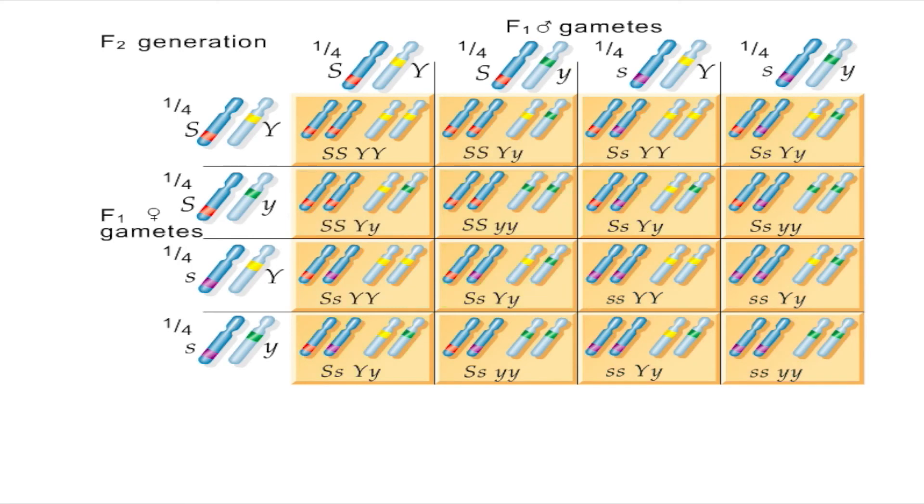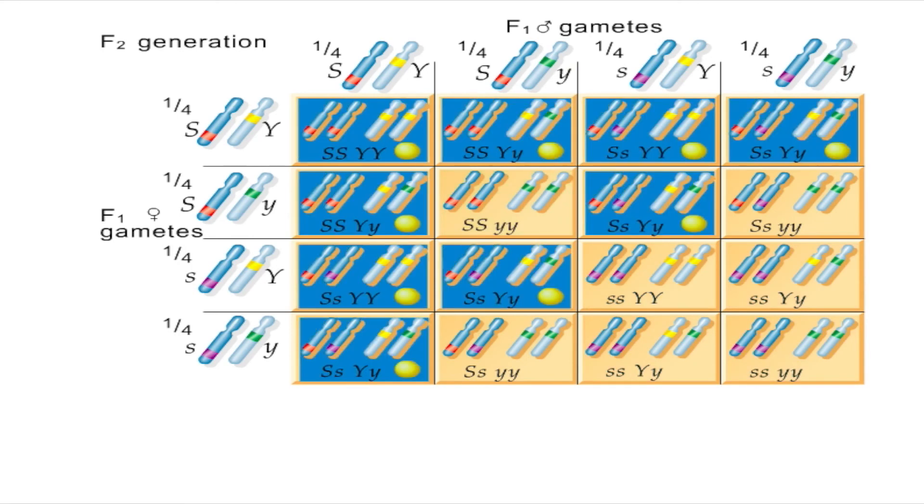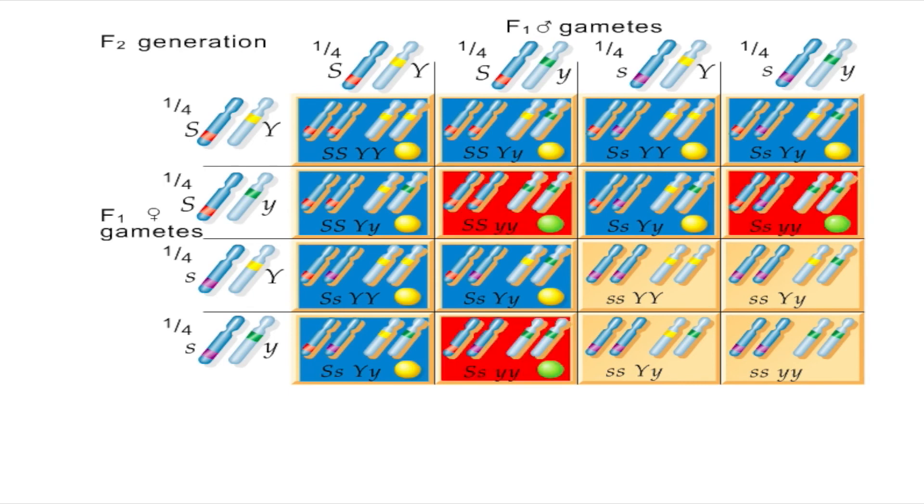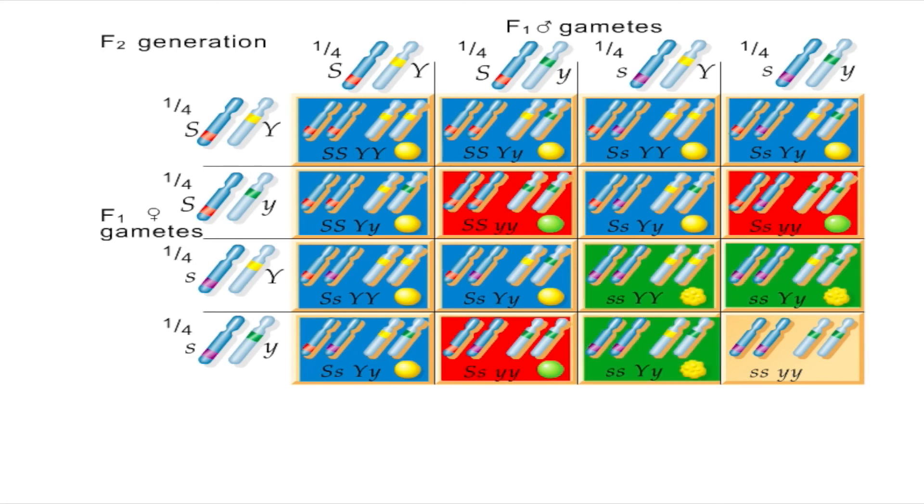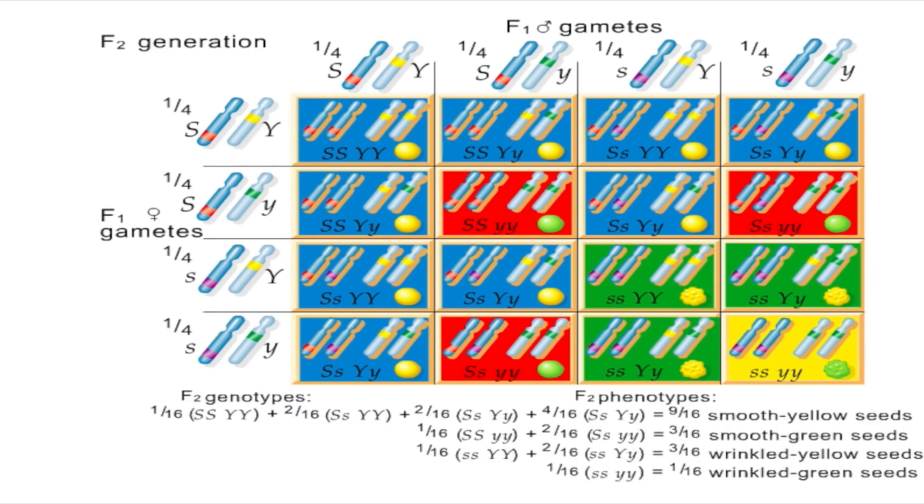only four phenotypes result in the F2. Nine show both dominant traits, smooth and yellow. Three show the traits dominant smooth and recessive green. Three show the traits recessive wrinkled and dominant yellow. And one shows both recessive traits, wrinkled and green.